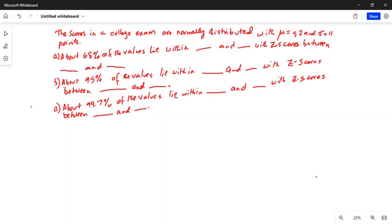The scores in a college exam are normally distributed with mean mu equal to 52 and standard deviation sigma equal to 11. First part A, about 68% of the values lie within blank and blank with Z scores between blank and blank. About 95% of the values lie within blank and blank with Z scores between blank and blank. And about 99.7% of the values lie within blank and blank with Z scores between this and this.